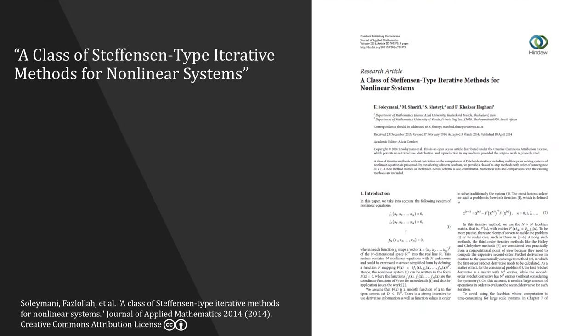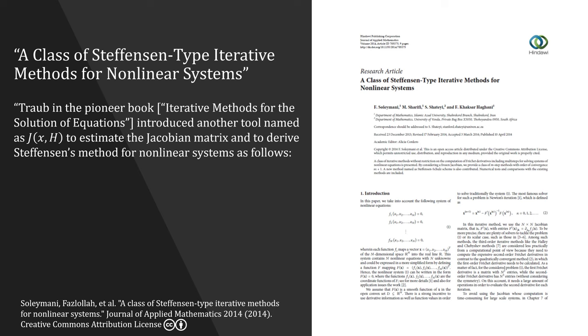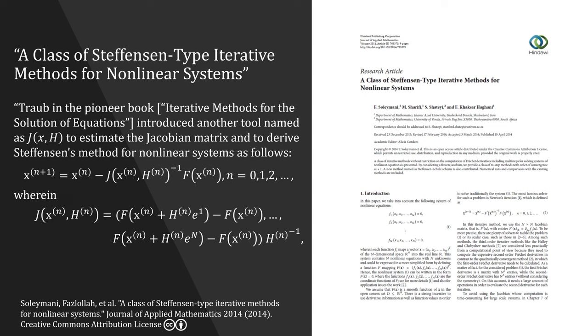In A Class of Steffensen-type Iterative Methods for Nonlinear Systems by Soleimani et al., the authors write, Traub, in the pioneer book, the one we went over, introduced another tool named as J to estimate the Jacobian matrix and to derive Steffensen's method for nonlinear systems as follows, which looks like Newton's method, wherein J looks like this equation and H as the diagonal. Notice the notation is slightly different, but this is actually easier to work with.